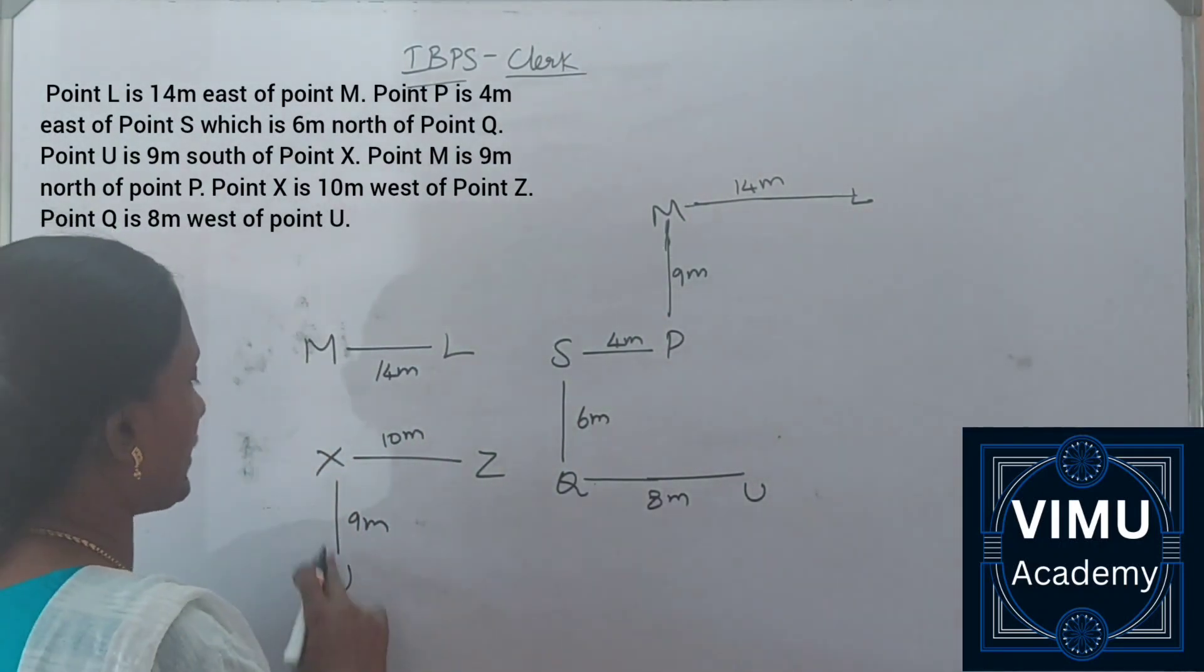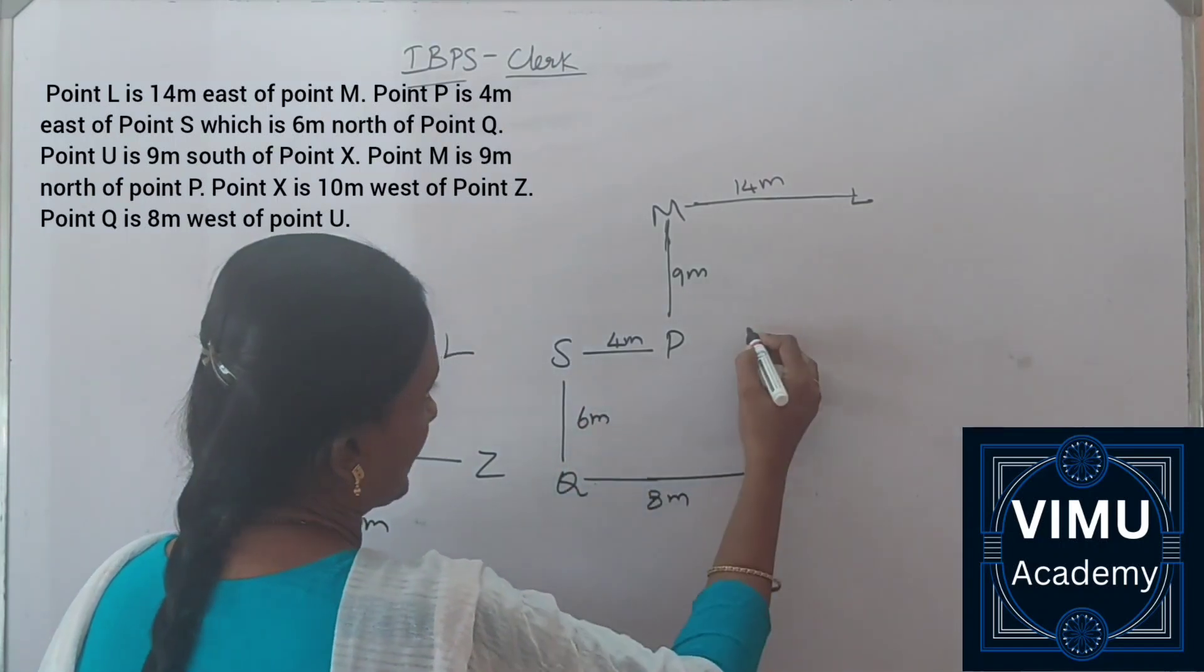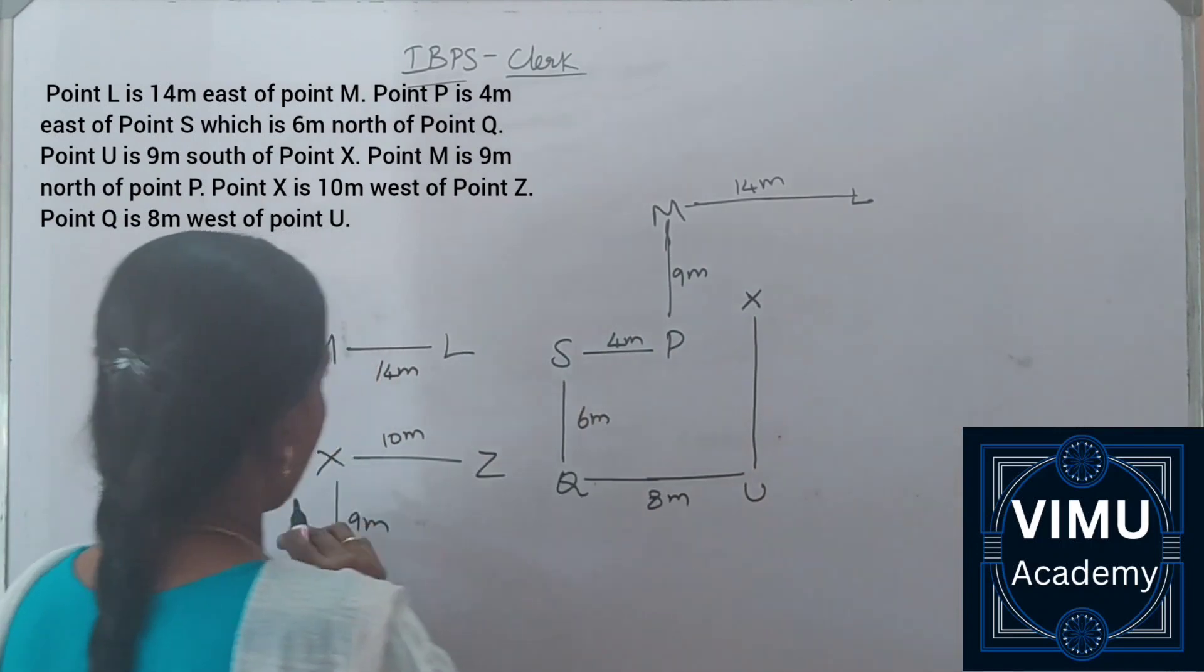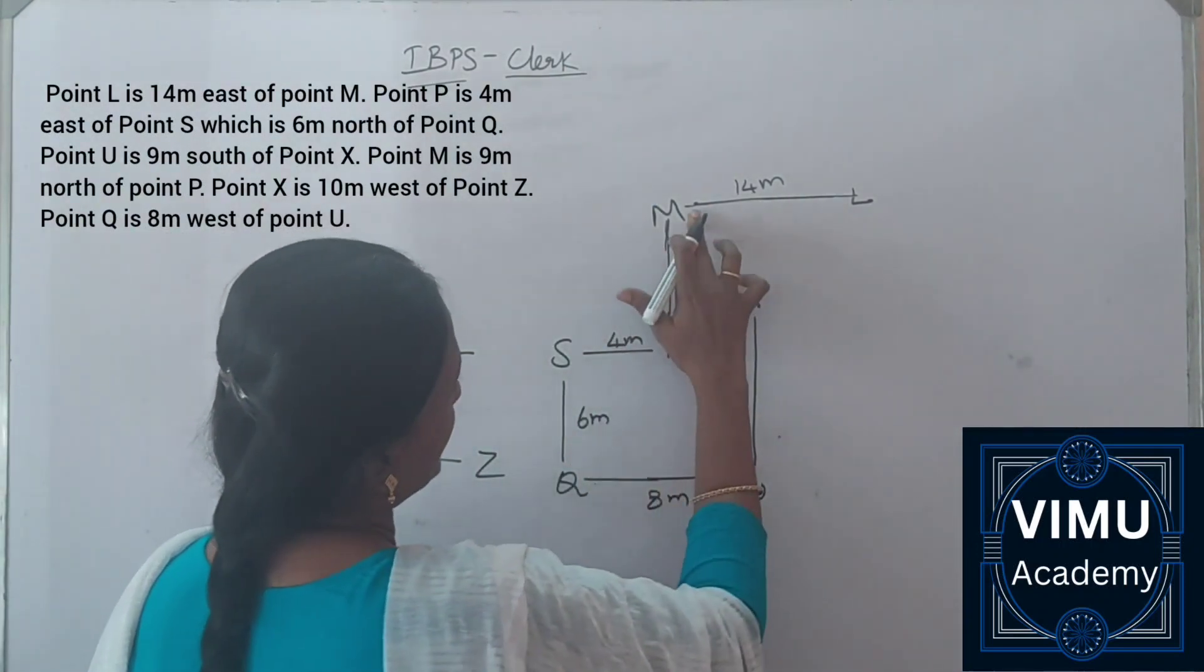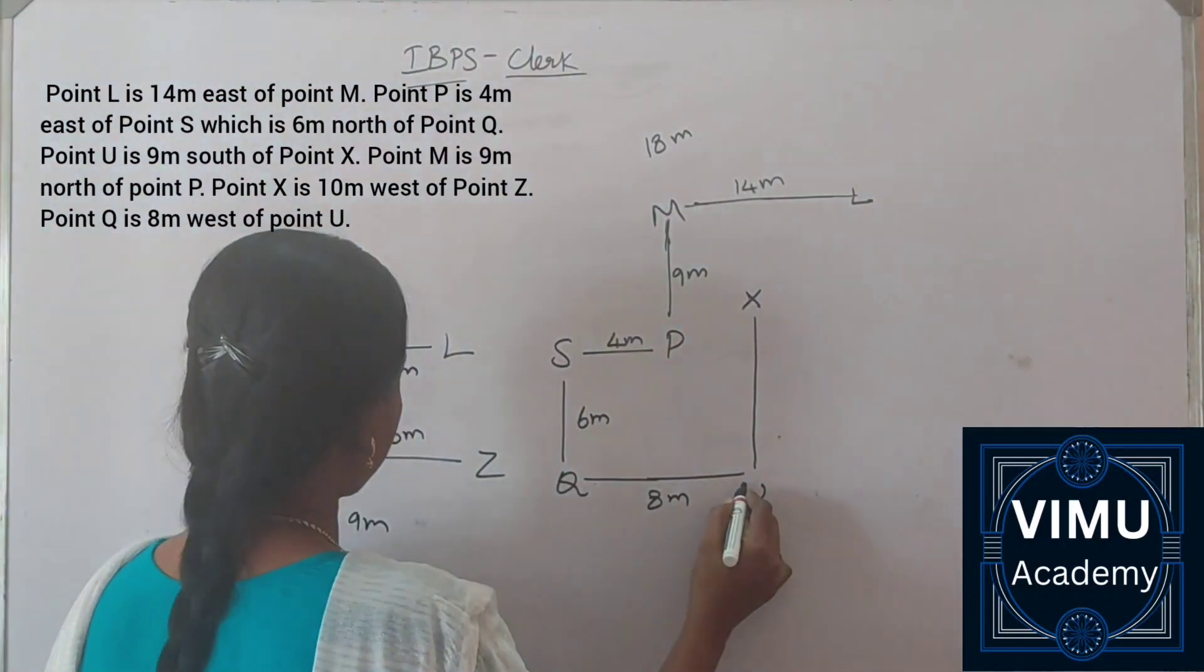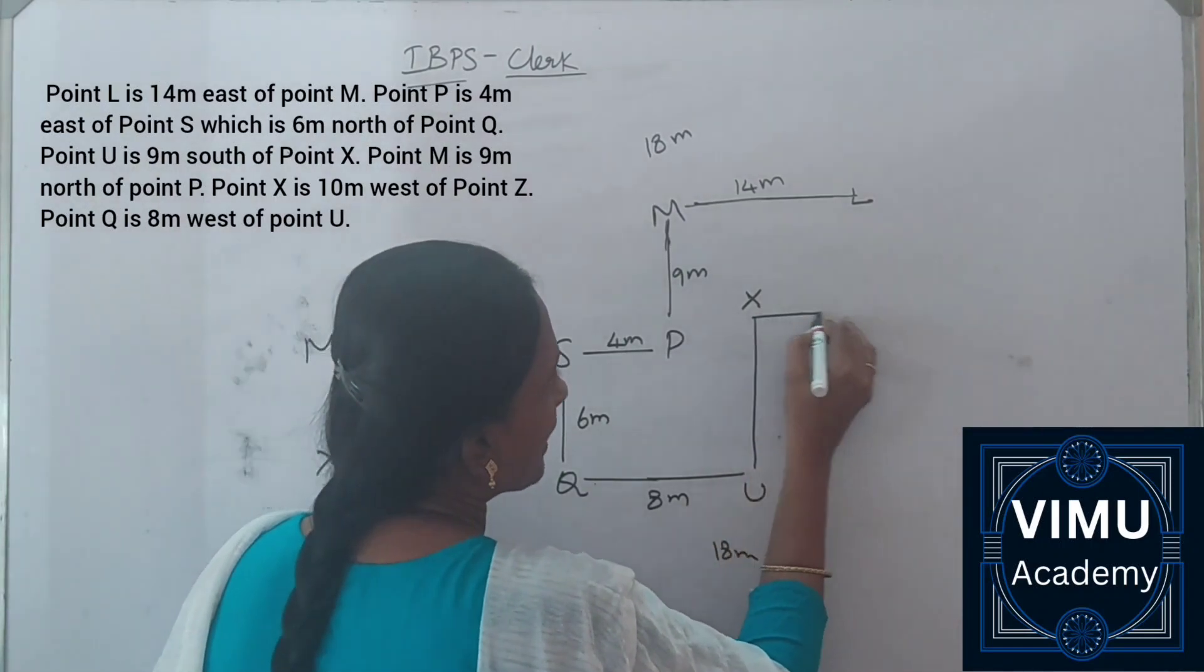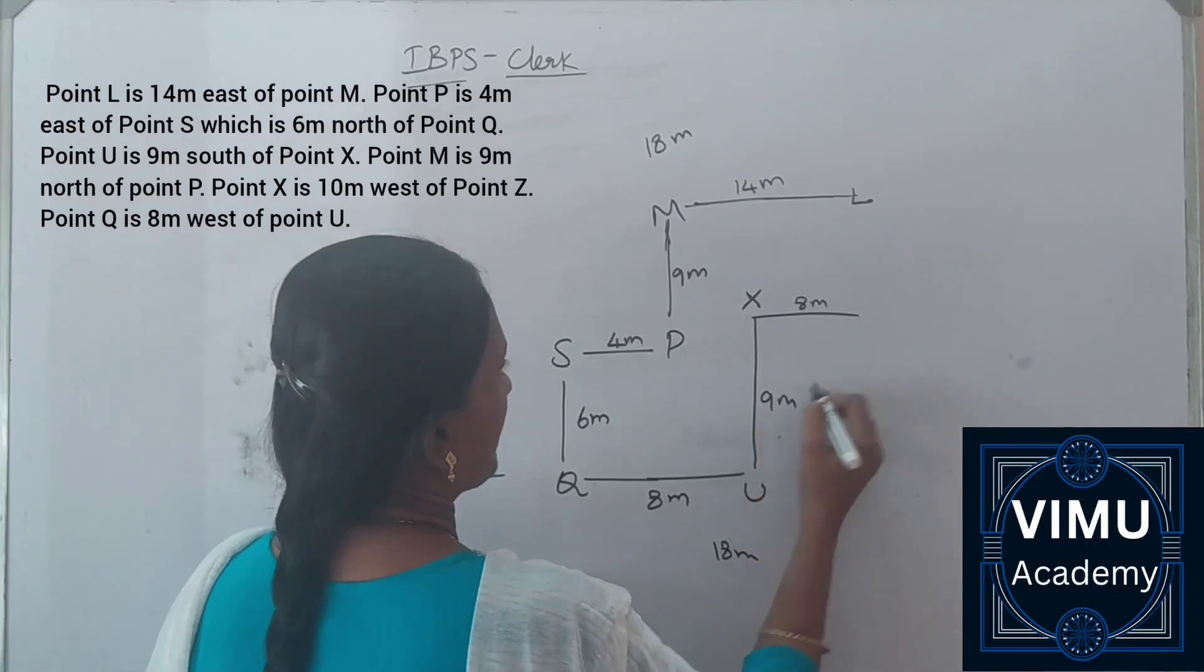Now the question asks about U relative to X. The distance is 9 meters vertically, and this is 6 meters. For the horizontal distance, this is 4 meters and 14 meters. If you add 14 plus 4 that equals 18 meters. So this total is 18 meters, and this is 8 meters.